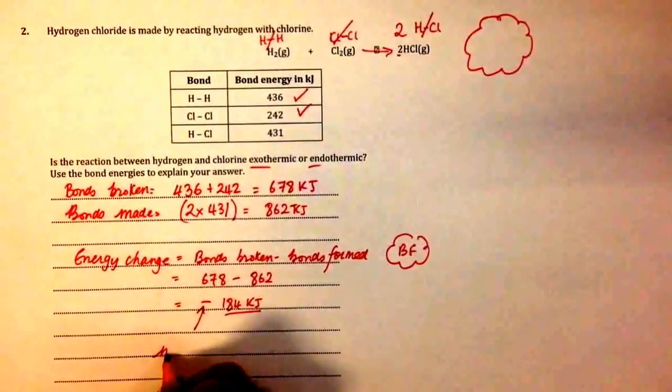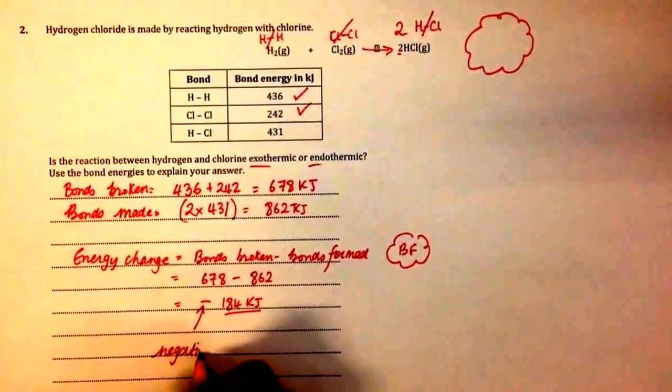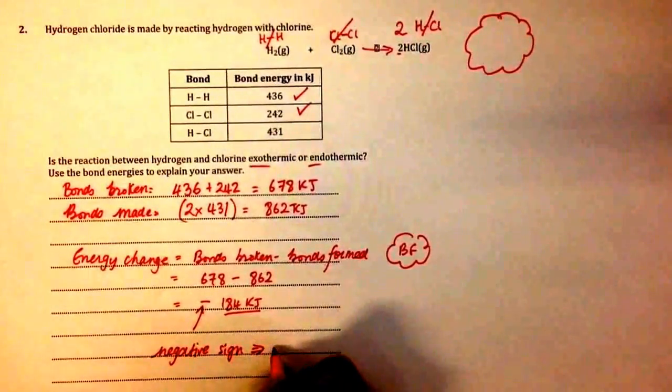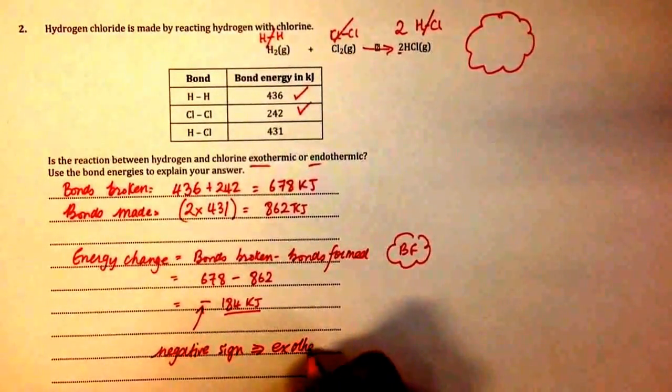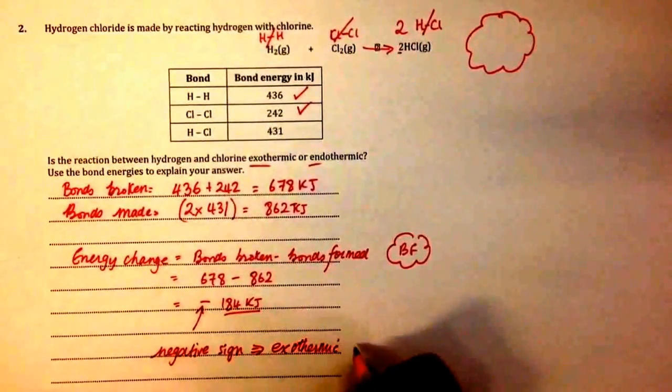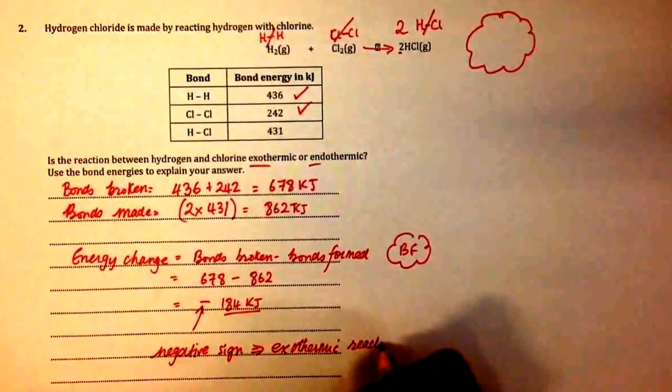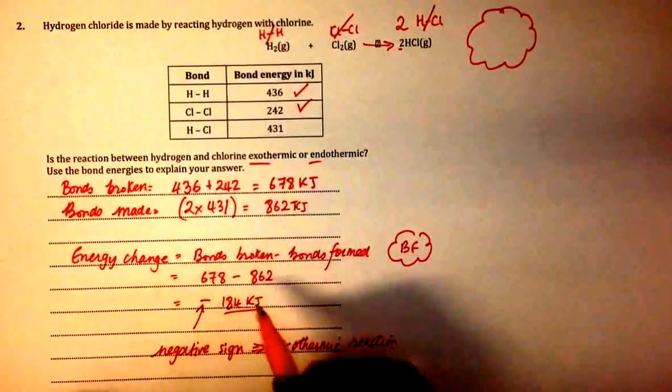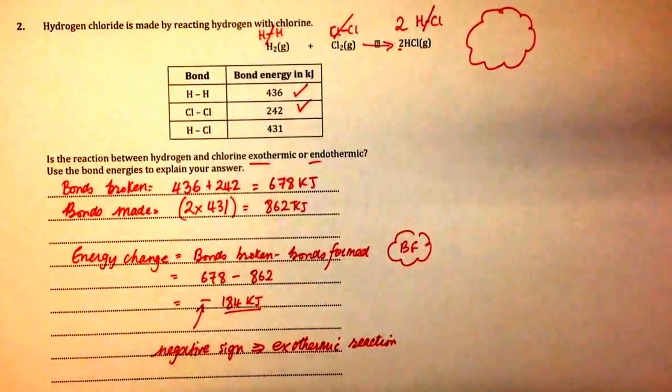Because there's a negative sign, that means the system, the reaction, gives out heat. Therefore, it's an exothermic reaction. If the sign were positive, it would mean the reaction is endothermic. But because it's negative, it shows the reaction is exothermic.